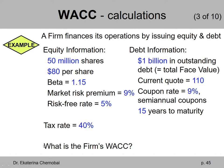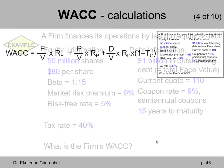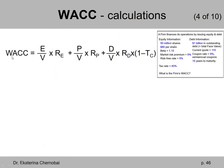Let's calculate this firm's weighted average cost of capital. This is the WACC formula. On the right I have a small image of the previous slide with all the given information. Right away you can cross out the part of the WACC formula related to preferred stock because we don't have any.